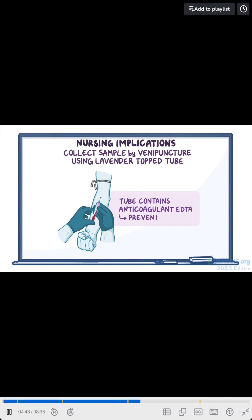First, collect the sample by venipuncture using a lavender-topped tube. This tube contains the anticoagulant EDTA to help prevent clotting of the sample. After obtaining your sample, remember to gently invert the sample several times to ensure the EDTA mixes with the blood.